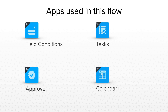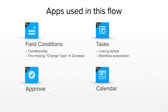The apps we'll be using today are: first, the Field Conditions app for creating conditionality around ticket fields — for example, showing and hiding the risk and impact fields based on the change type. Then the Tasks app for creating links between tickets, such as spinning off a change ticket from a problem ticket. The Approve app for sending out approvals and getting responses back from the required parties. And finally the Calendar app for planning when a change will take place.